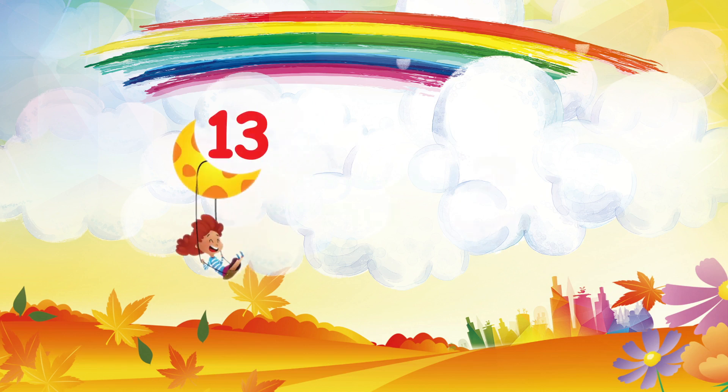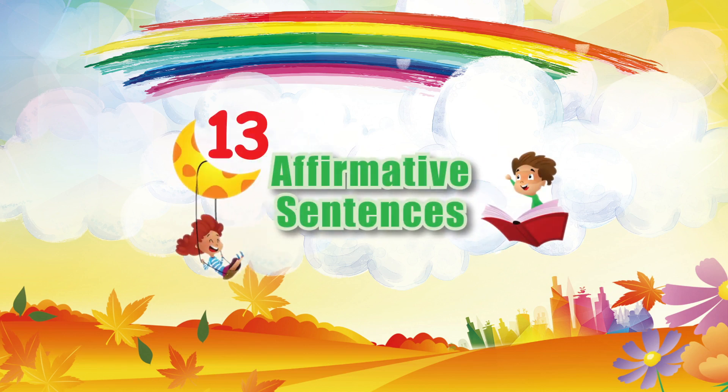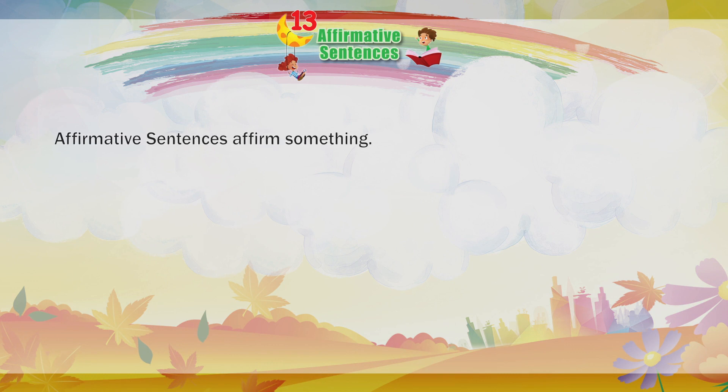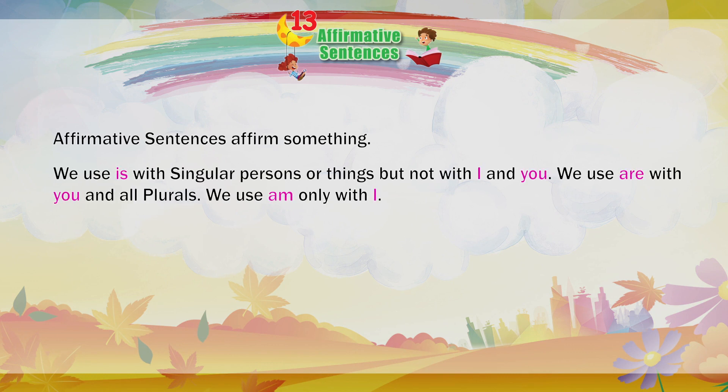Chapter 13: Affirmative Sentences. Affirmative sentences affirm something. We use 'is' with singular persons or things, but not with 'I' and 'you'. We use 'are' with 'you' and all plurals. We use 'am' only with 'I'.